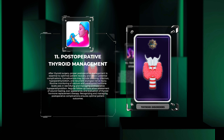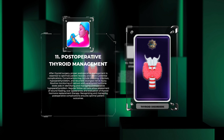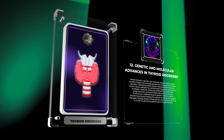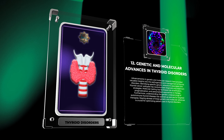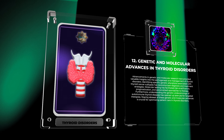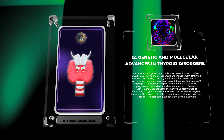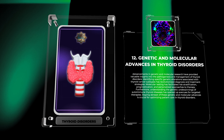After thyroid surgery, proper postoperative management is essential to optimize patient recovery and detect potential complications. Complications may include bleeding, infection, hypoparathyroidism, and recurrent laryngeal nerve injury. Routine monitoring of calcium and parathyroid hormone levels aids in identifying postoperative hypoparathyroidism. Regular follow-up visits allow assessment of wound healing, scar appearance, and evaluation of thyroid hormone replacement therapy.